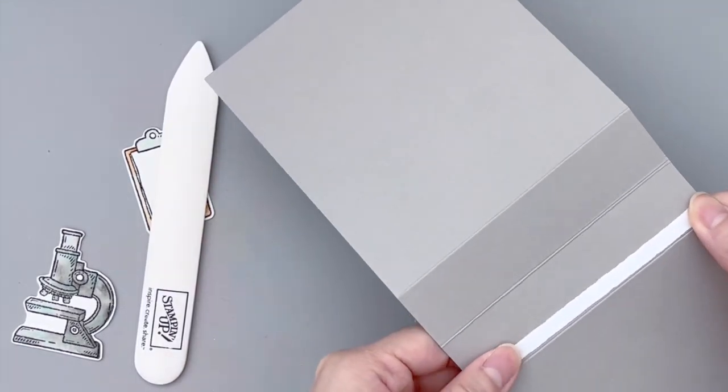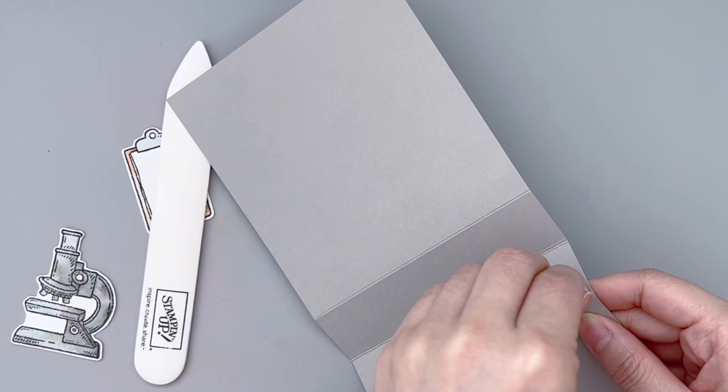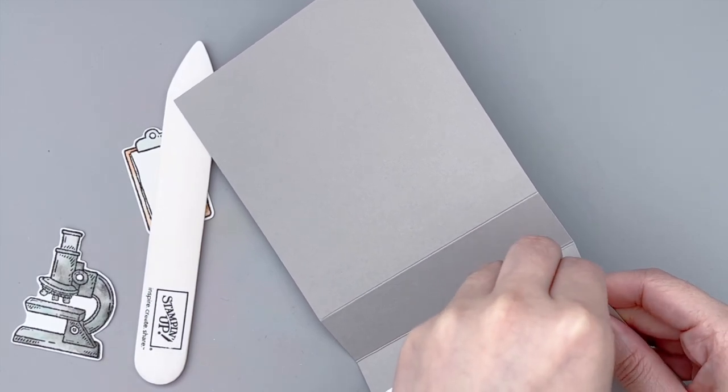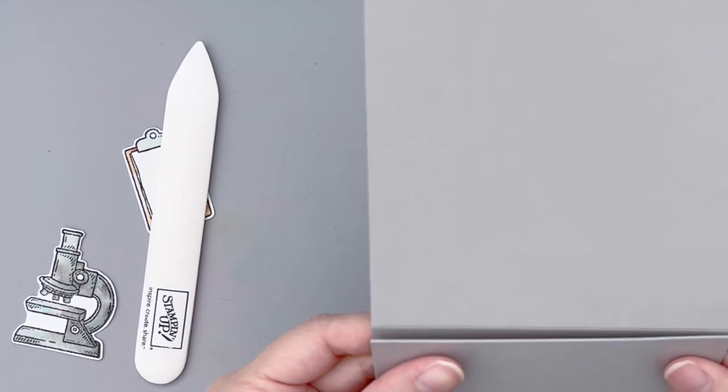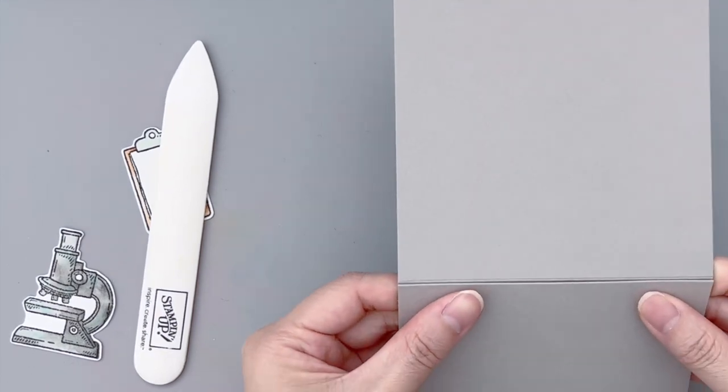We also need to adhere the bottom parts together. Here I'm only applying a narrow strip of double-sided tape along the very edge of one of these score lines.